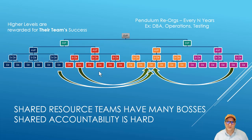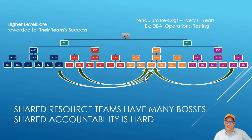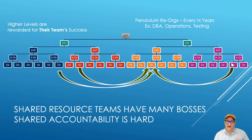With a shared team, you've got three different VPs all pretending to be their bosses, and accountability is hard - they have to pick what the priorities are for each. The teams depending on them are not going to feel like they're getting good service. The teams being held accountable for delivery will either end up blame-pointing, or this shared team is going to be blamed for everything, which is just as bad.